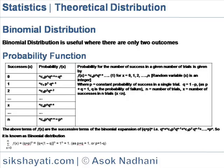Binomial distribution. Binomial distribution is useful where there are only two outcomes, i.e. success or failure, good or defective, hit or miss, yes or no, etc. Probability function.